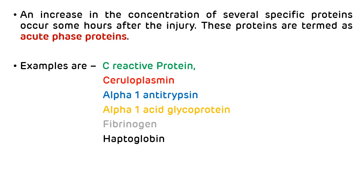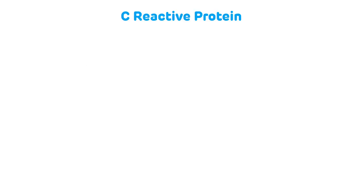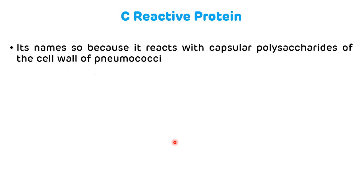Now let's see C-reactive protein in detail. C-reactive protein is named so because it reacts with capsular polysaccharides of the cell wall of pneumococci. This C-reactive protein is synthesized by the liver. It is involved in the body's response to foreign compounds.